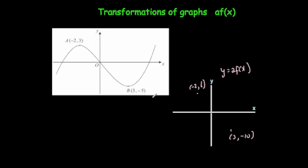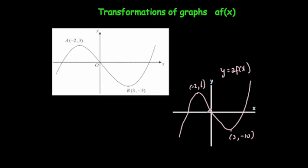It still crosses at those two x-intercept points. So let's draw the graph — it's going to go up, through here, through the origin, through 3, minus 10, and up again. Notice it's stretched the graph by a scale factor of 2: the heights have gone twice as high up and twice as low, and it's steeper here and here.